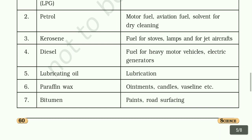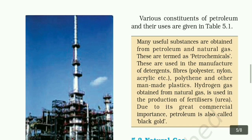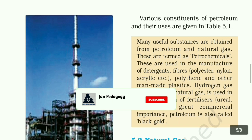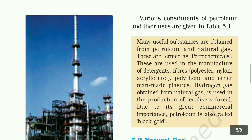Many useful substances are obtained from petroleum and natural gas. These are termed petrochemicals and are used in the manufacture of detergents, fibers like polyester, nylon, acrylic, polythene, and other man-made plastics. Hydrogen gas obtained from natural gas is used in the production of fertilizers like urea. Due to its great commercial importance, petroleum is also called black gold.